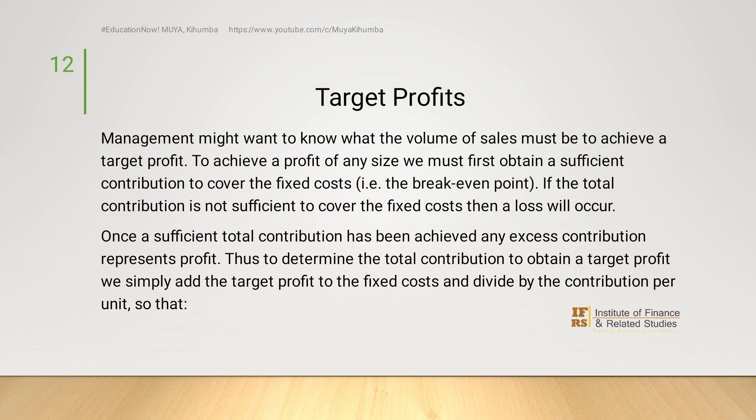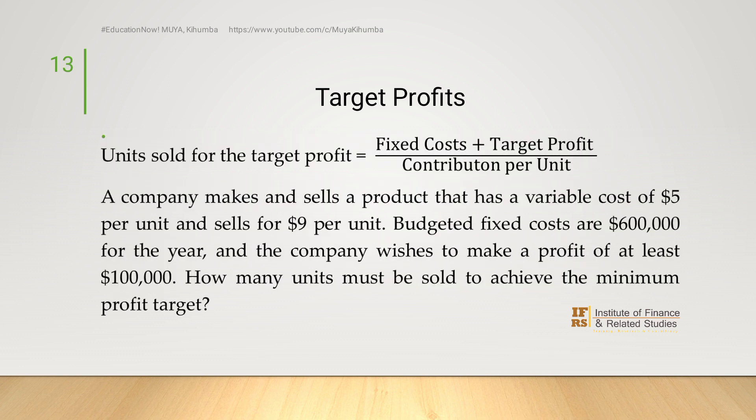Let's look at target profit. Management might want to know what volume of sales must be achieved in order to attain a target profit. To achieve a profit of any size, we must first obtain sufficient contribution to cover fixed costs — that is, first we must break even. If contribution is not sufficient to cover fixed costs, we end up with losses. Once sufficient contribution is achieved, any excess contribution represents a profit. Therefore, to determine the total contribution needed to obtain a target profit, we simply add target profit to fixed costs and divide by contribution per unit.